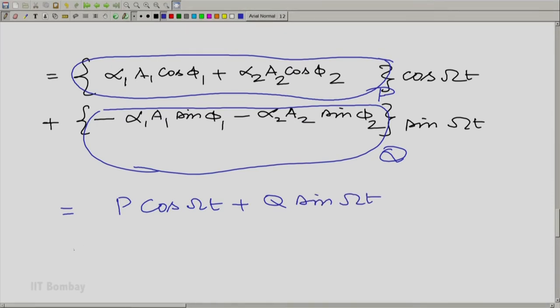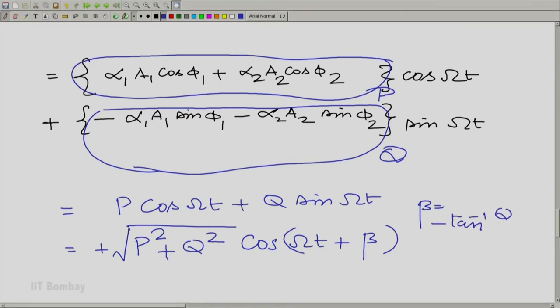And this is easily seen to be √(P² + Q²) cos(Ωt + β), and β is essentially the negative of tan⁻¹(Q/P).